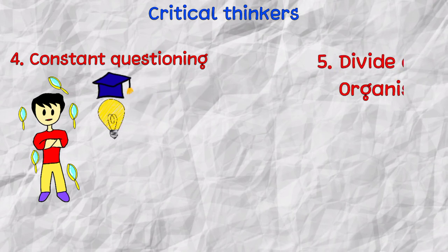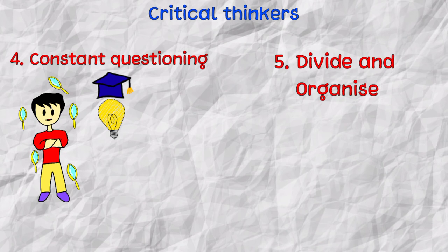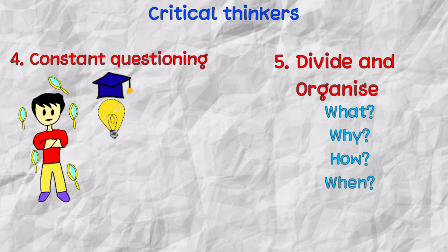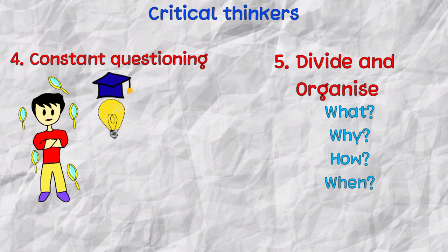Fifth is that they divide and organize. Critical thinkers divide the topic according to the questions like what, why, how, when, and organize the information so that it can be easily accessible and helpful in decision-making.